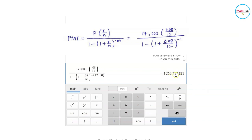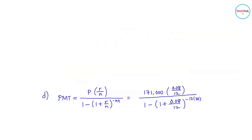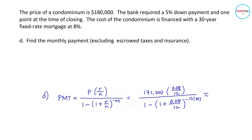Rounding this off to the nearest dollar, we have $1,255. So based on our computation, the monthly payment is approximately equal to $1,255.